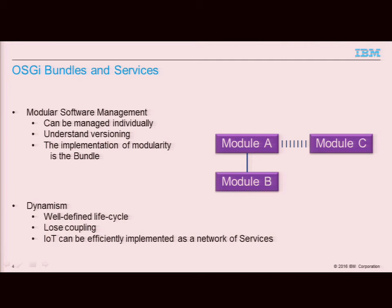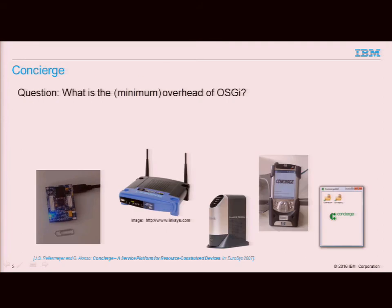That is a pattern that scales very well to distributed systems, and we've actually used this a couple of times in applications to make them loosely coupled. So, that's the value of OSGi to embedded systems or IoT in particular. What is Concierge? Well, Concierge started as my personal question as to what the minimum overhead of OSGi can be.